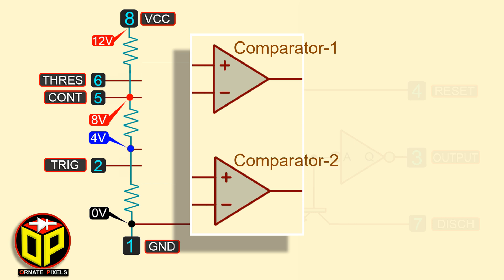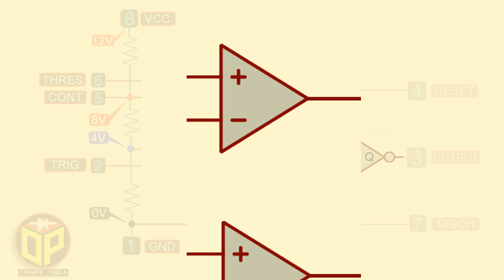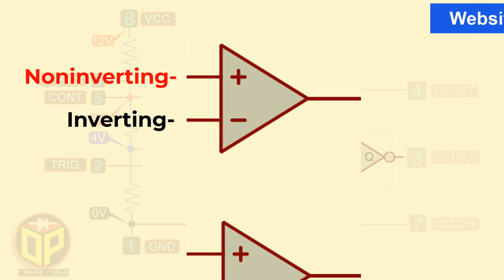The function of the comparator is to compare two input voltages and give an output. This comparator has two input pins and one output pin. The minus sign is the inverting pin and the plus is the non-inverting pin.